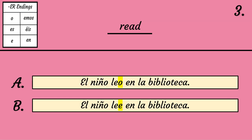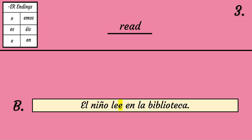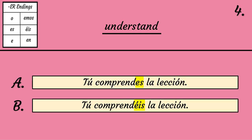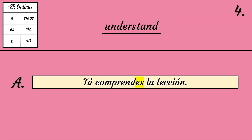What is the correct conjugating form? A. Leo. B. Lee. The correct answer is B — El niño lee en la biblioteca. What is the correct conjugating form? A. Comprendes. B. Comprendéis. The correct conjugating form is A. Comprendes — Tú comprendes la lección.